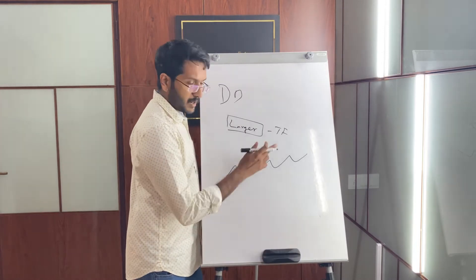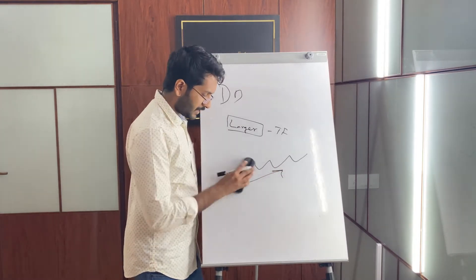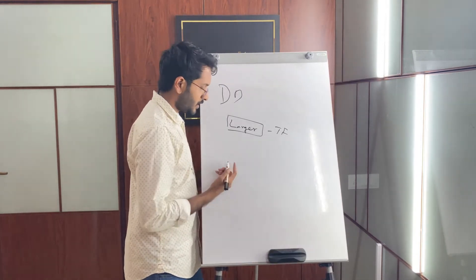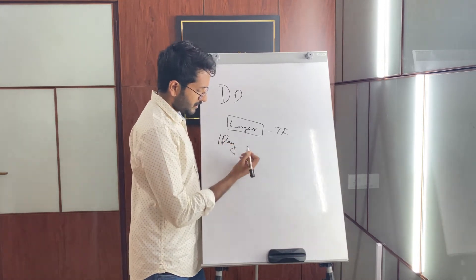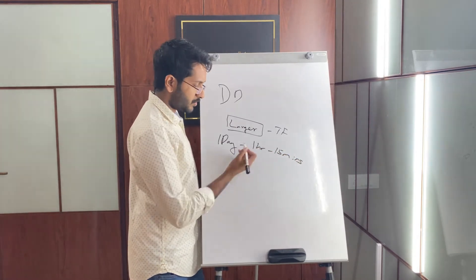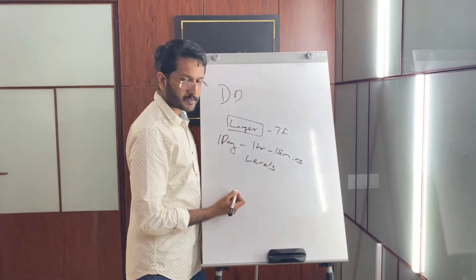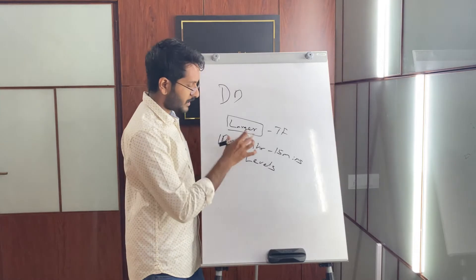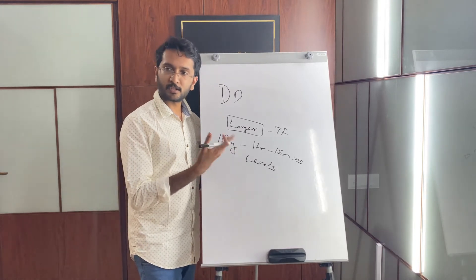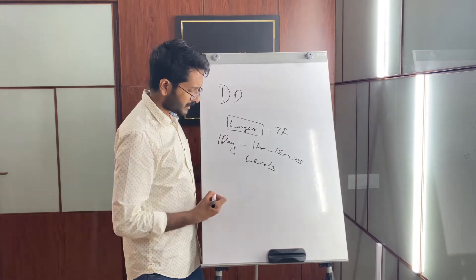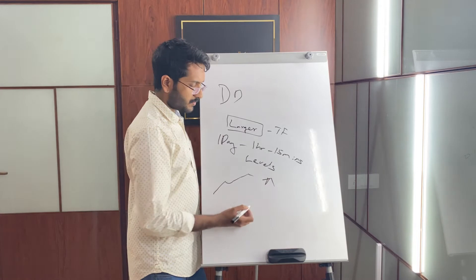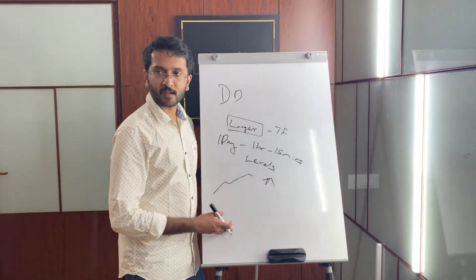In the larger time frame, if I see this is in an upside trend, then I will get into the shorter time frame. For intraday trading, I could start on the one-day time frame, then get down into the one-hour time frame, then into the fifteen-minute time frame. I could mark levels on these time frames and check out for opportunities. For something in an uptrend in a larger time frame, it is best to check out for long-side opportunities.